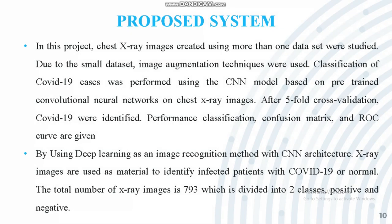In our proposed system, COVID-19 case classification is performed using the CNN model based on a pre-trained convolutional neural network on chest X-ray images. By using deep learning as an image recognition method with CNN architecture, we can achieve above 90% accuracy. The dataset used has a total of 793 X-ray images, divided into two classes: positive and negative.